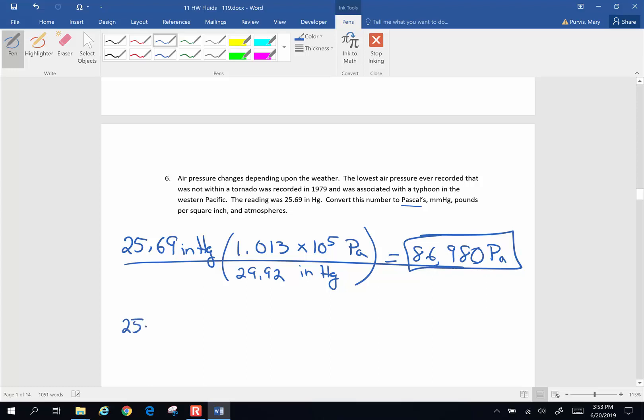Next one, 25.69 inches of Mercury, and we're going to convert this into millimeters of Mercury. 29.92 inches of Mercury are equal to 760 millimeters of Mercury. And when I do that, that ends up being 653 millimeters of Mercury.